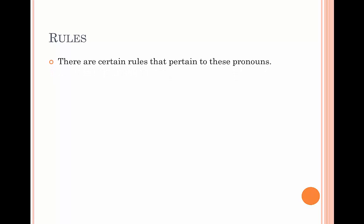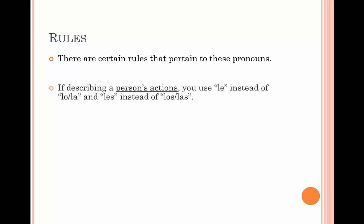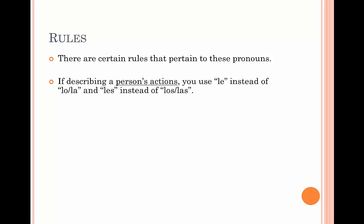Here are some rules. There are certain rules that pertain to using object pronouns. If we're describing a person's actions, we use le instead of lo or la, and les instead of los or las. So whenever we're speaking of a person, we use le. For example, le gusta.